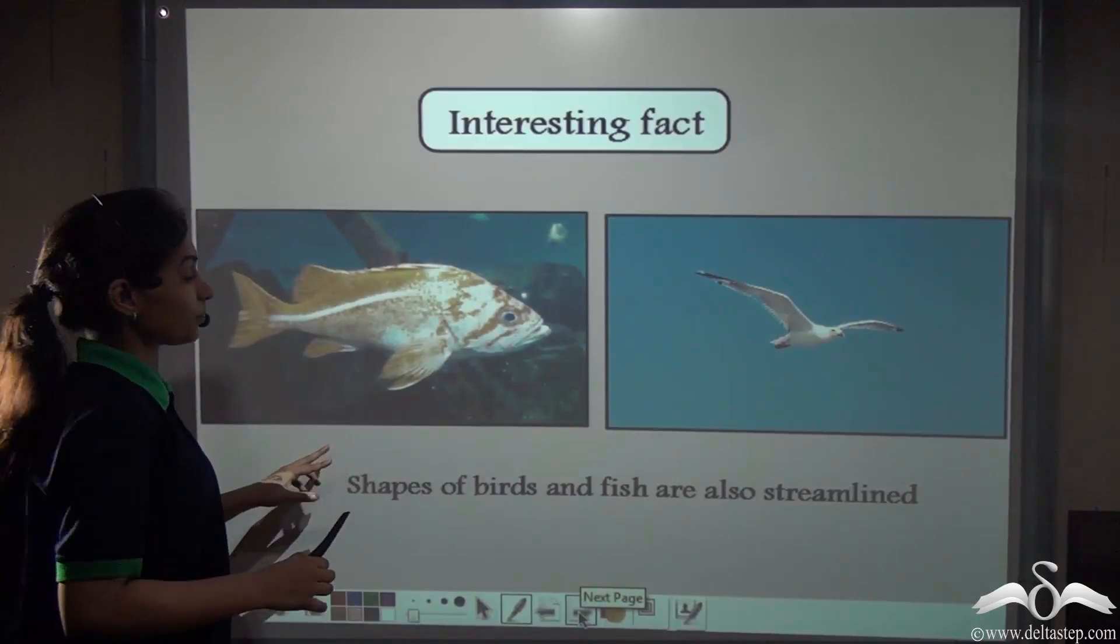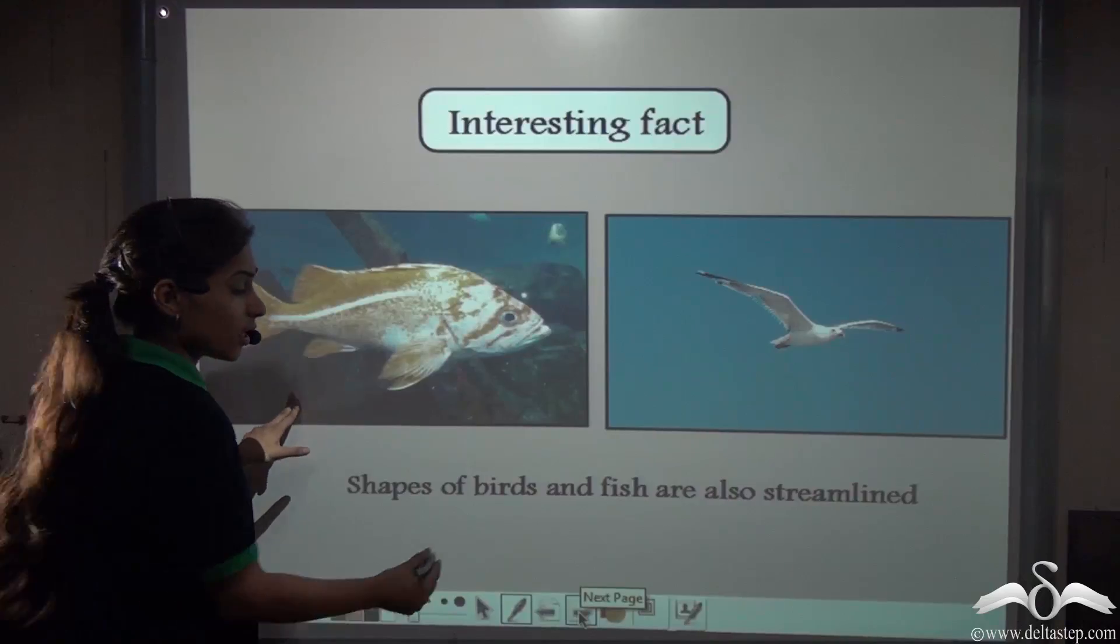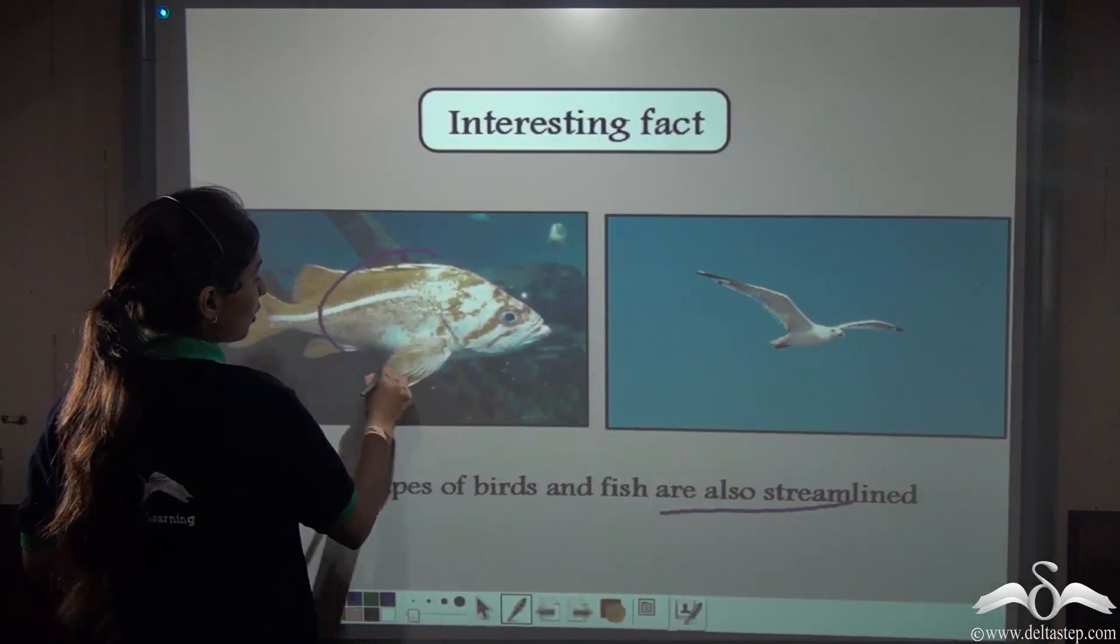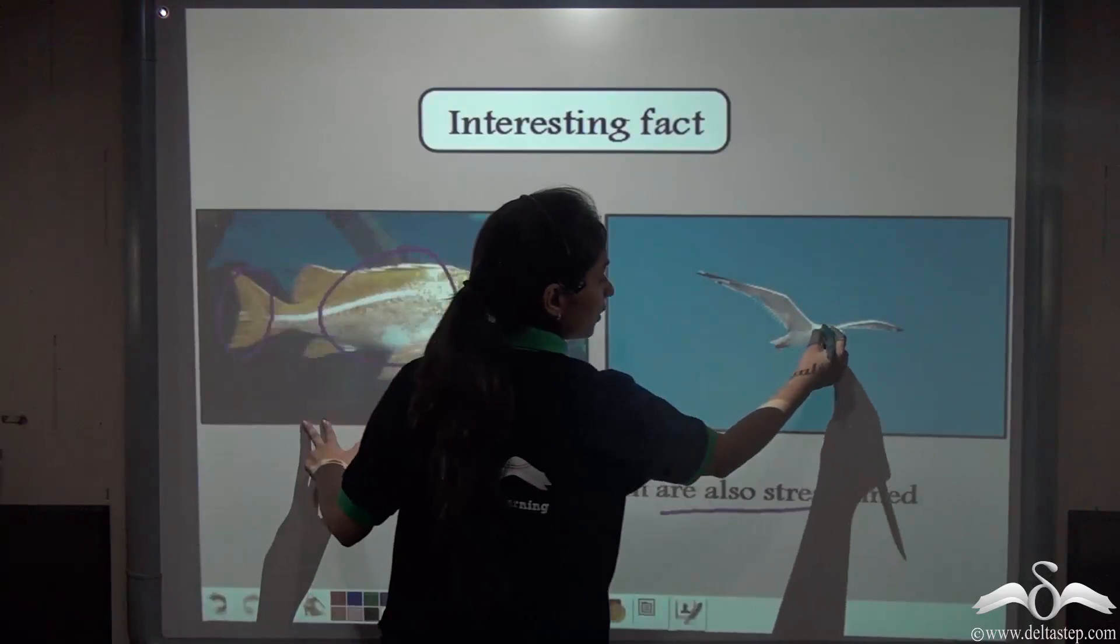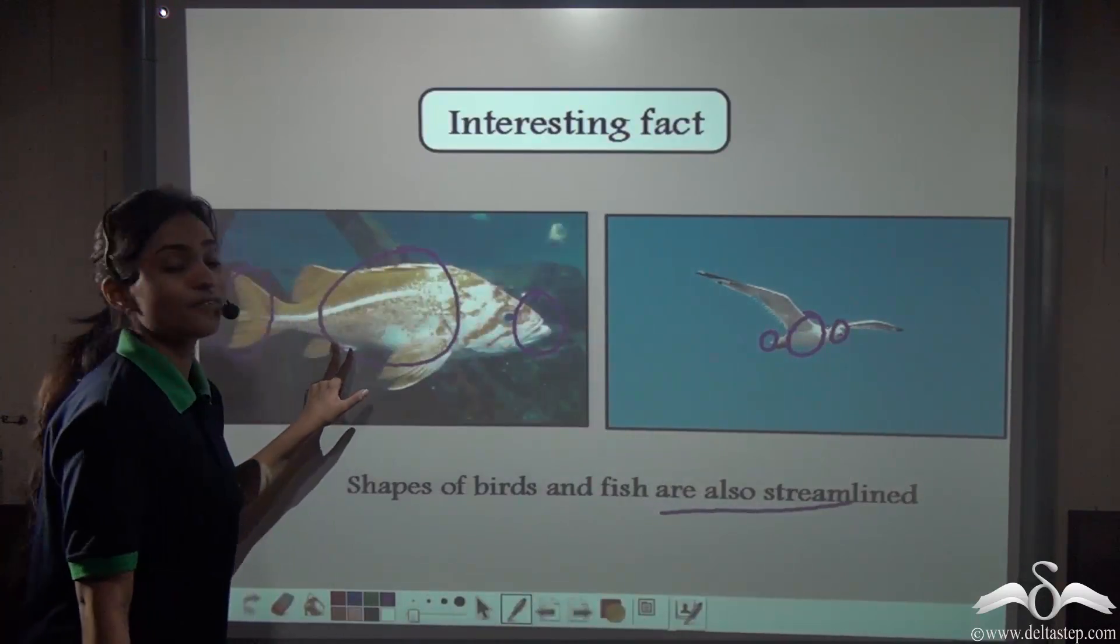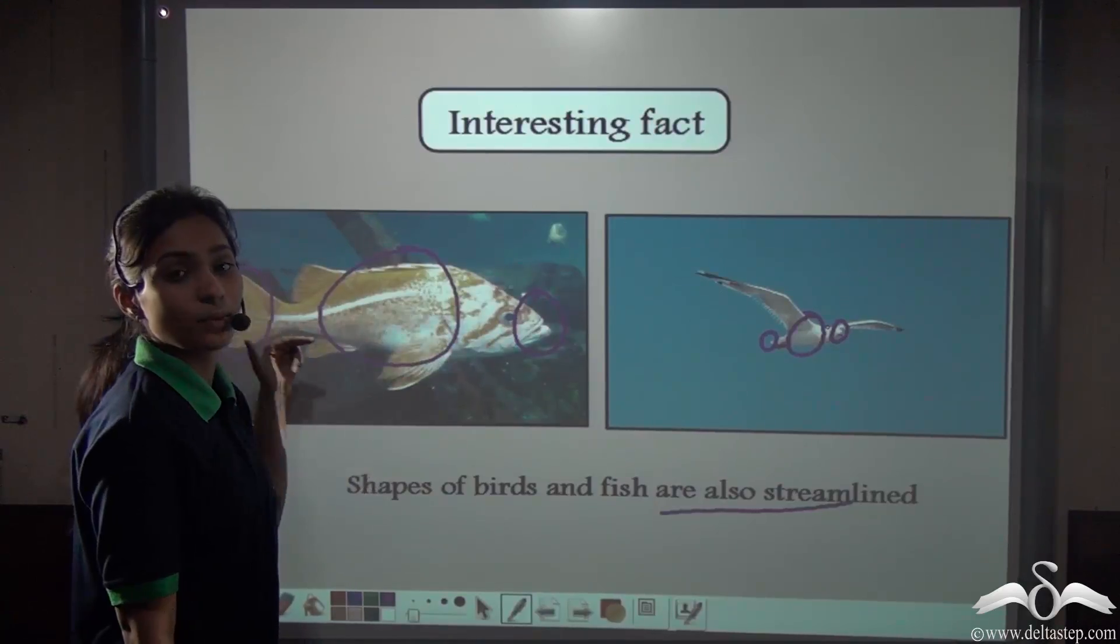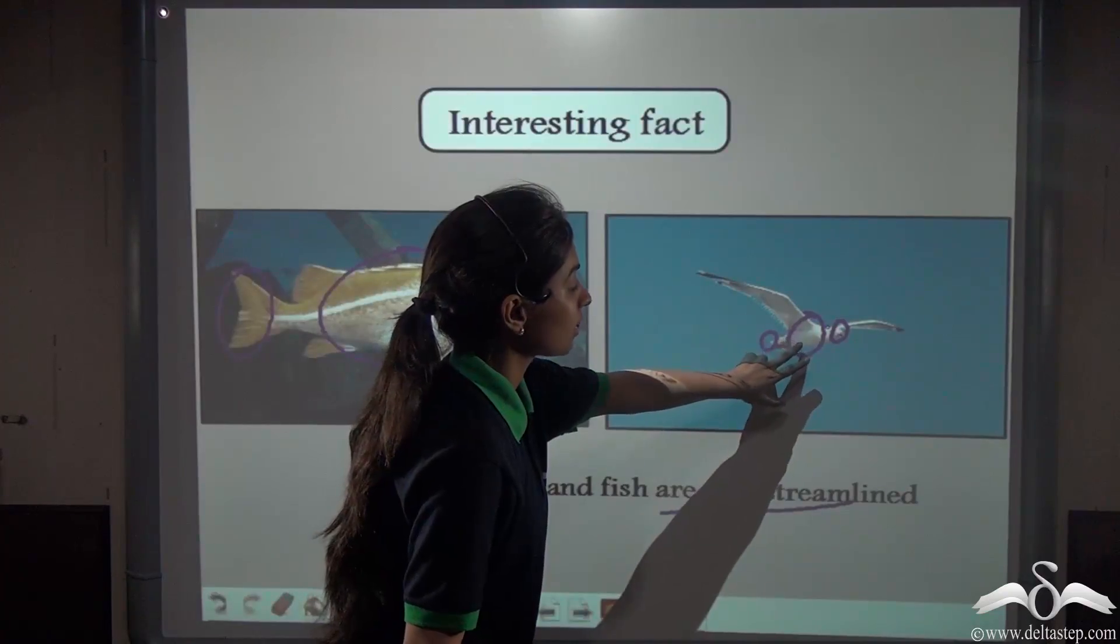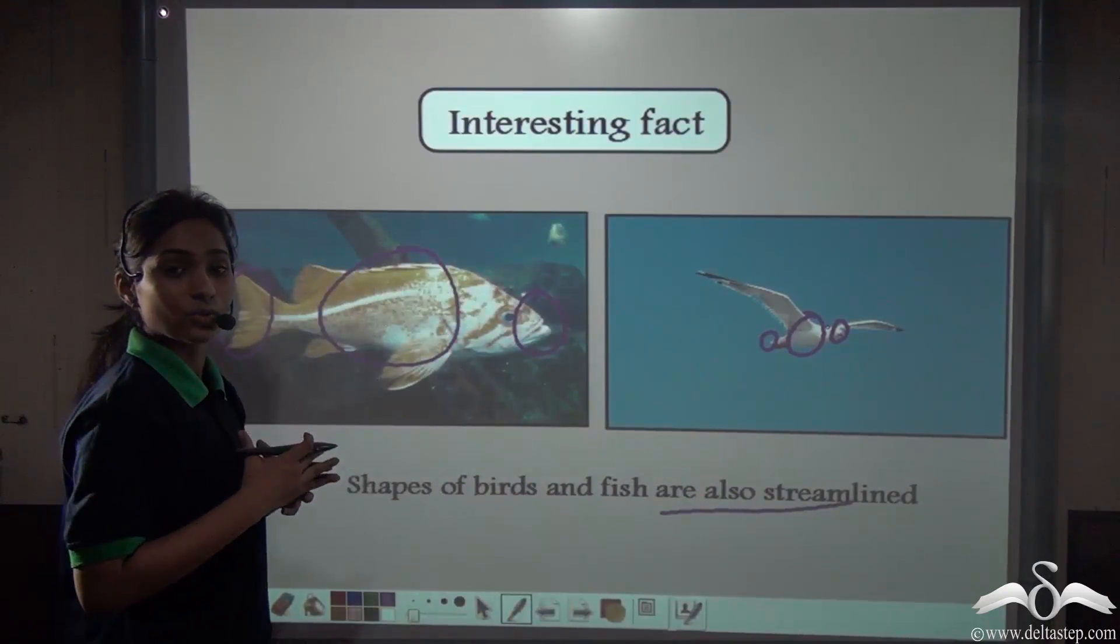If you notice, there is a very interesting fact about fishes and birds. They also have streamline shape. Look at the fish. It is broad in the middle and narrow at the corners. Or, if you look at the bird, it is broad in the middle and narrow at the corners. They have this streamline shape, so you can see that fishes swim very fast through the water and these birds fly very nicely through the air.